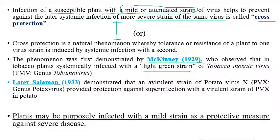Later, Salaman in 1933 demonstrated that an avirulent strain of potato virus X (PVX) provided protection against superinfection by the virulent strain of potato virus X in potato. He observed that if the avirulent strain of PVX is inoculated into potato, it can provide protection against superinfection by the virulent strain.